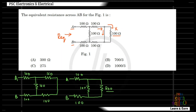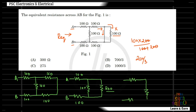Here is a 200 ohm resistor and a 100 ohm resistor. These two are in parallel. 100 ohm and 200 ohm are parallel. 100 ohm is parallel, 200 ohm is parallel.